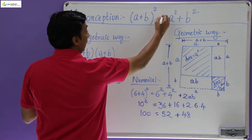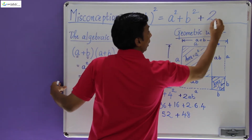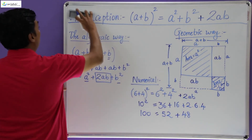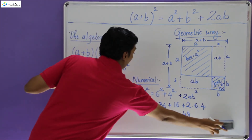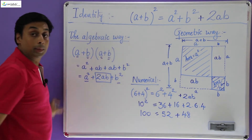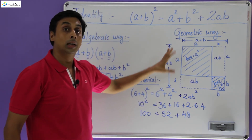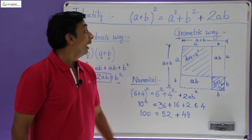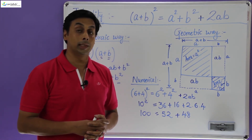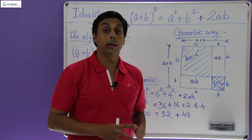Therefore, (a + b) whole square is going to be a² + b², which is the area of the two shaded regions, along with the area of the two rectangles, and the area of those two rectangles is 2ab. So we can now say that (a + b) whole square = a² + b² + 2ab. This converts the misconception into a formula — an identity. We have arrived at a logical conclusion: (a + b)² = a² + b² + 2ab. I hope you would never repeat this mistake.